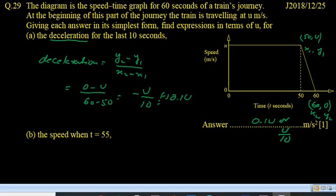Now part b is the speed when t is equal to 55. So t = 55 must be here somewhere. And we have to find the speed.